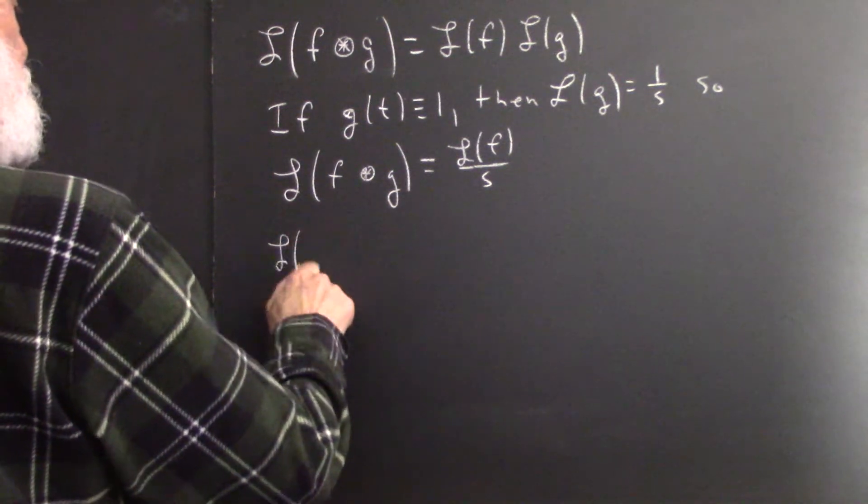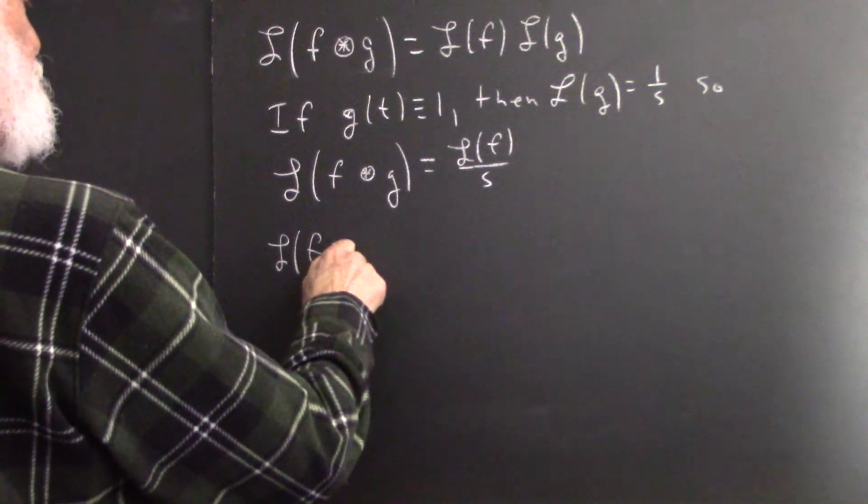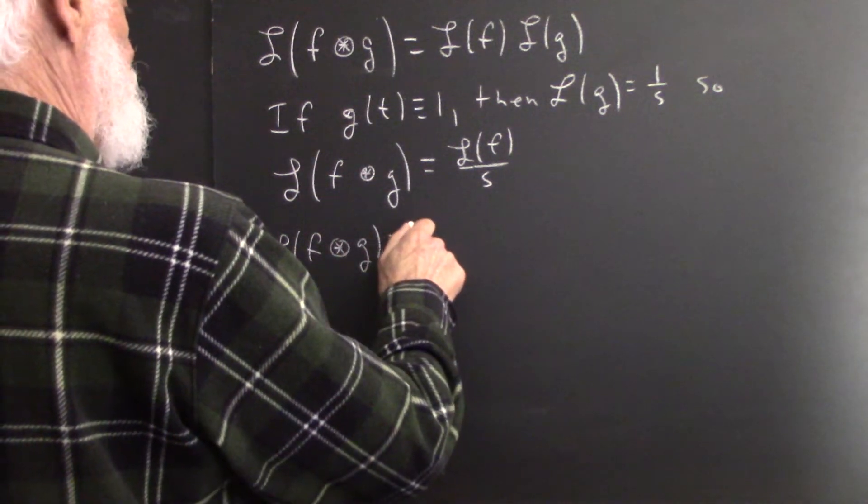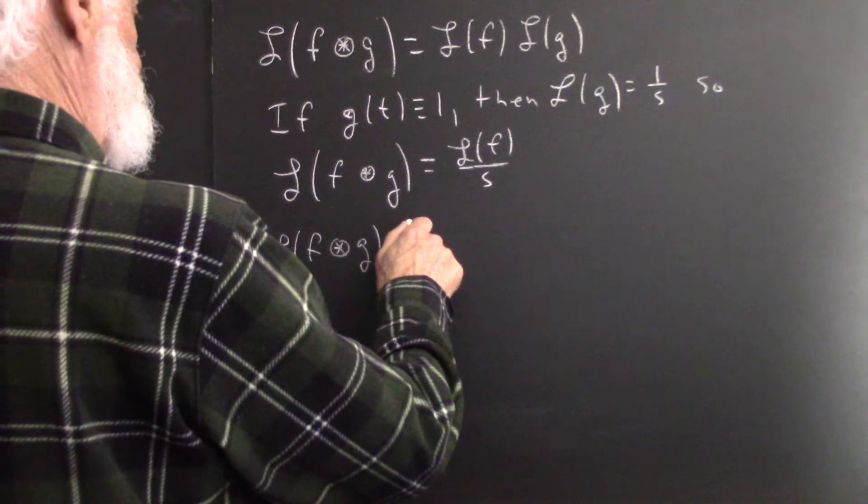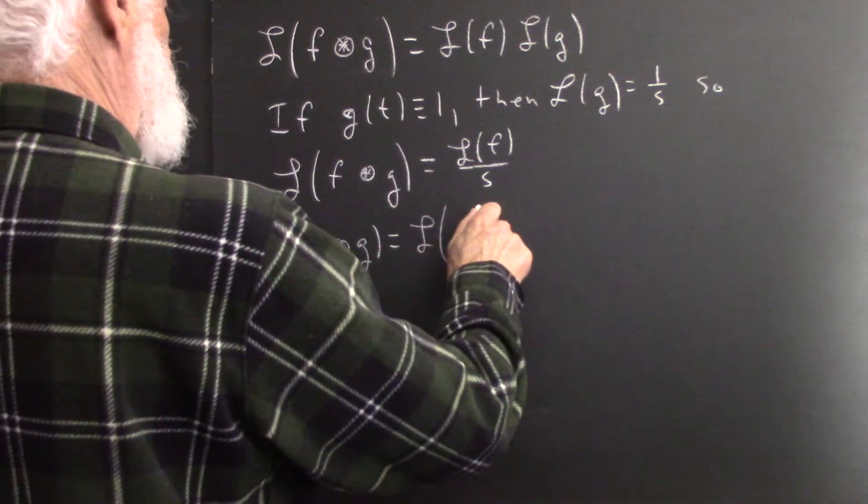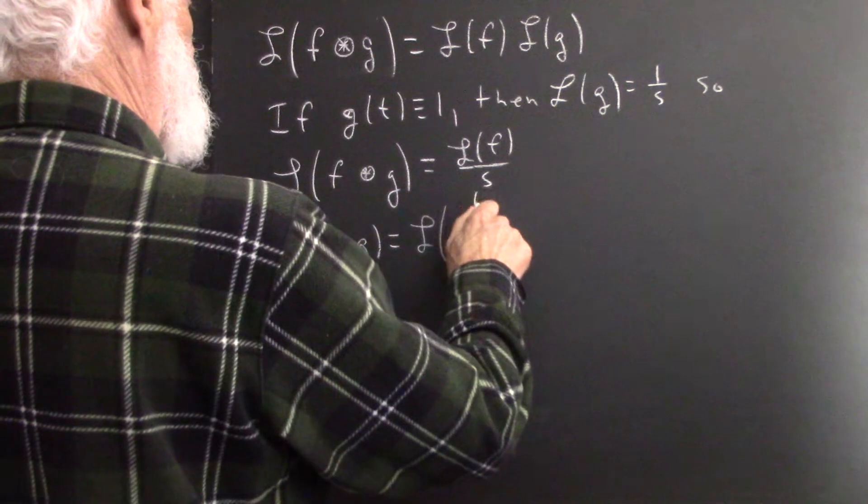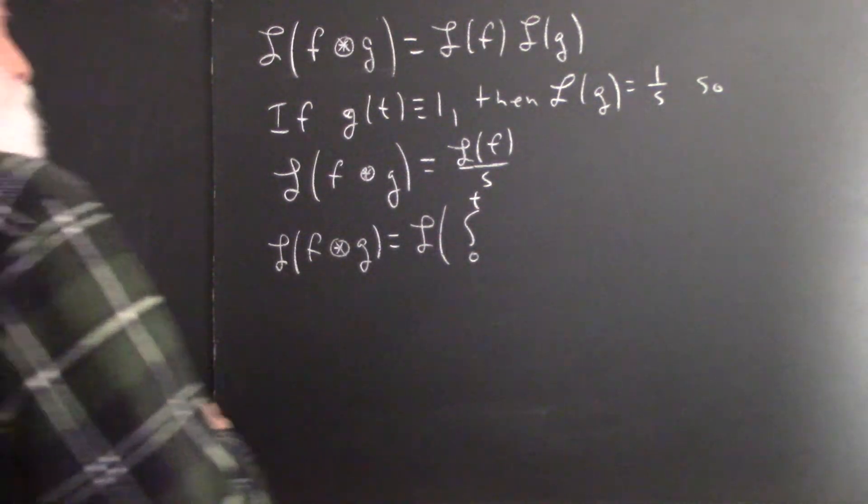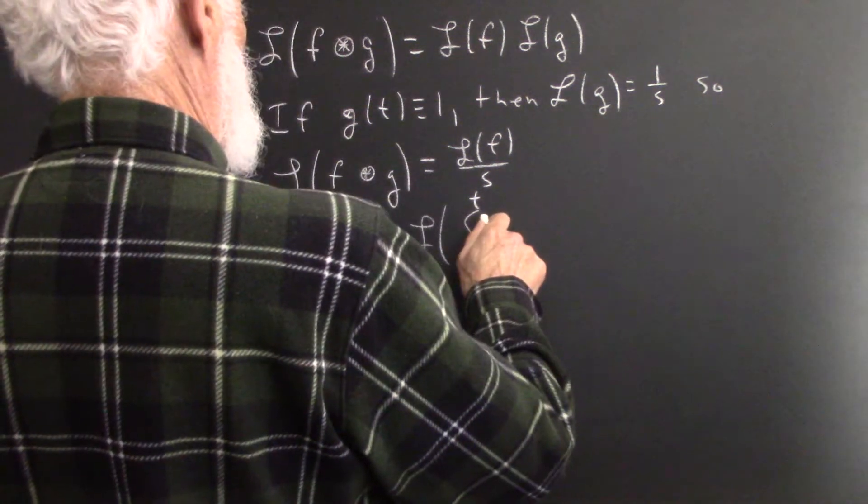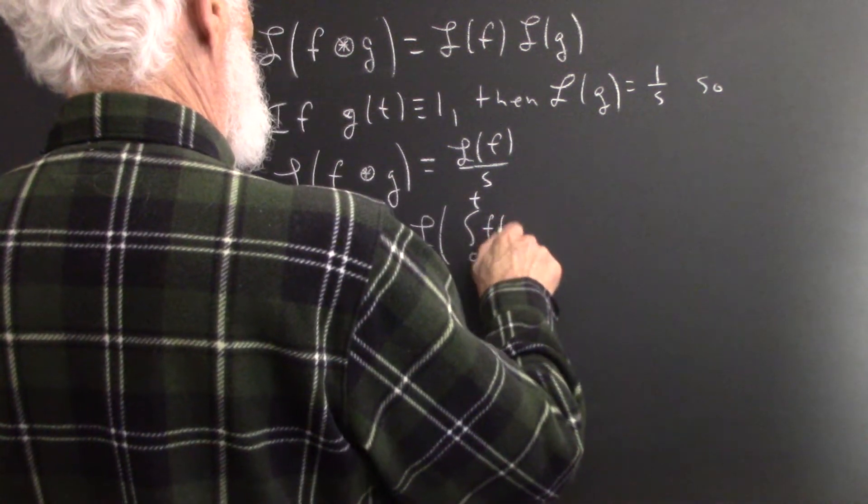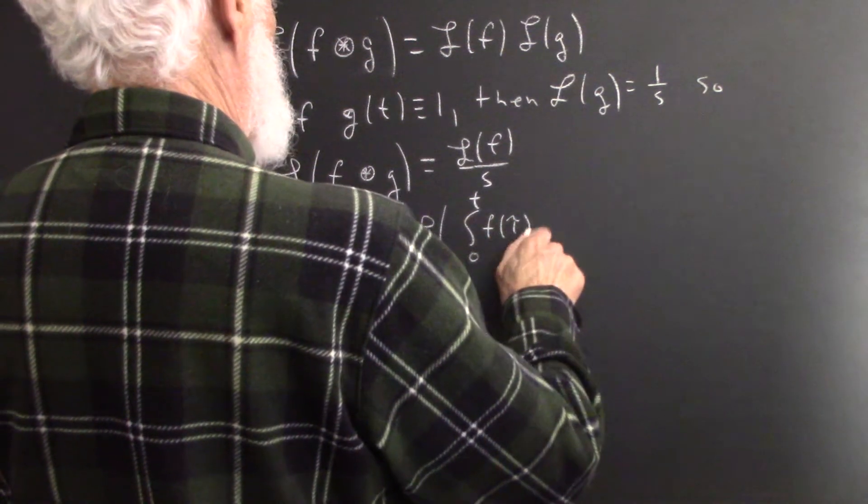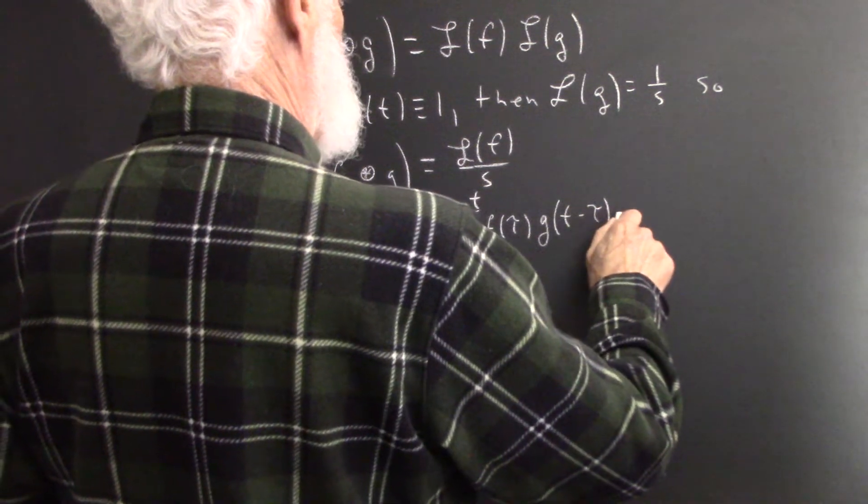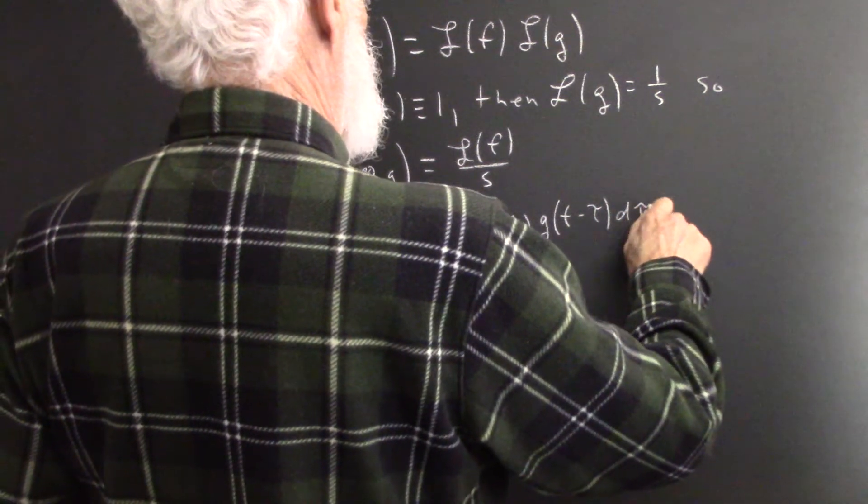Also, the Laplace transform of f with g is the Laplace transform of the integral that represents the convolution. And that's the integral from 0 to t of f of tau times g of t minus tau d tau.